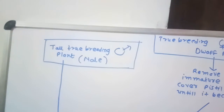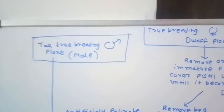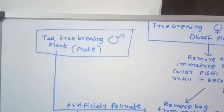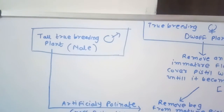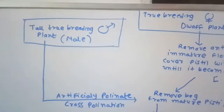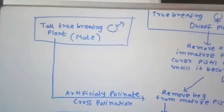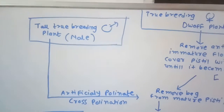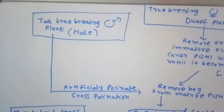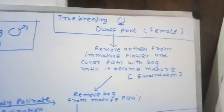If a plant has bisexual flowers, then there is a chance that self-pollination may occur. If self-pollination occurs, then cross-pollination will be very difficult or will not give proper results. Since the pea plant possesses bisexual flowers, there is a chance that two plants will undergo self-pollination before cross-pollination can take place.